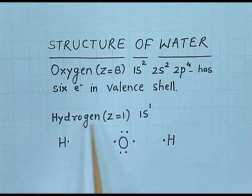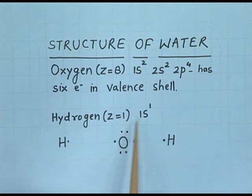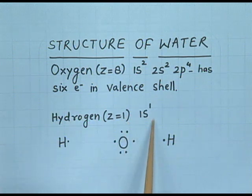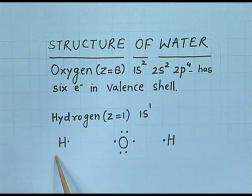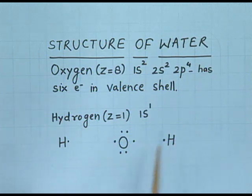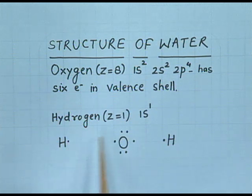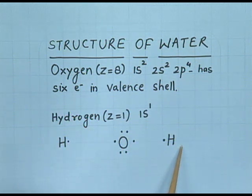Hydrogen has atomic number 1 with electronic configuration 1s1. Now you can see the two hydrogen atoms and one oxygen atom. These dots are valence shell electrons — we call this the electron dot structure.